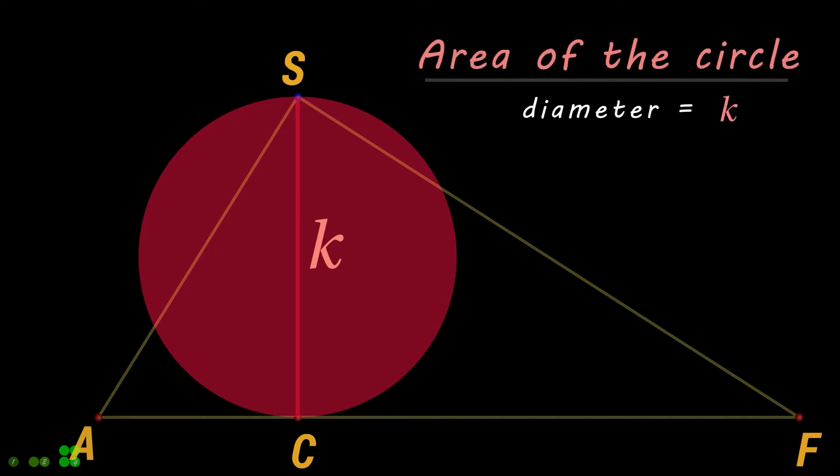Now for the area of this red circle. Since the radius is half of the diameter, therefore the area becomes...